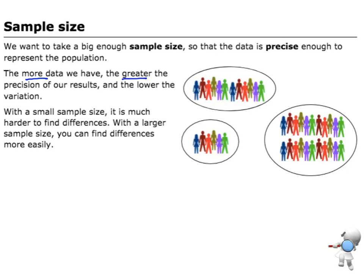Think about it in terms of the more information I have, the more knowledge I have, the better I can make a decision. So the more data you have, the more precise your results will be, and therefore the lower the variation.